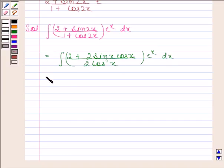This is equal to integral secant square x plus tan x into e to the power x dx.